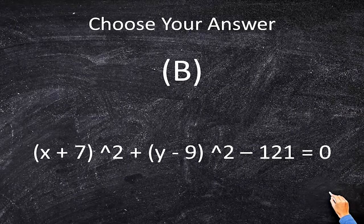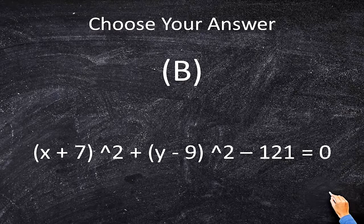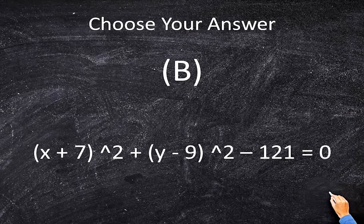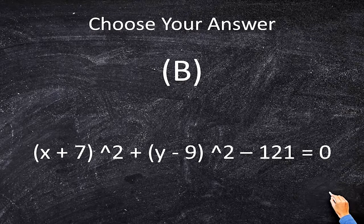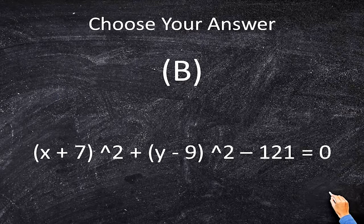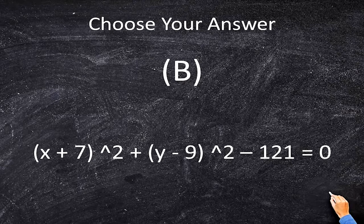So the correct answer choice is B. The answer is x plus 7 squared plus y minus 9 squared minus 121. And remember, it's 121 because that's 11 squared, and it's minus 121 because we moved over the answer to the other side of the equation.